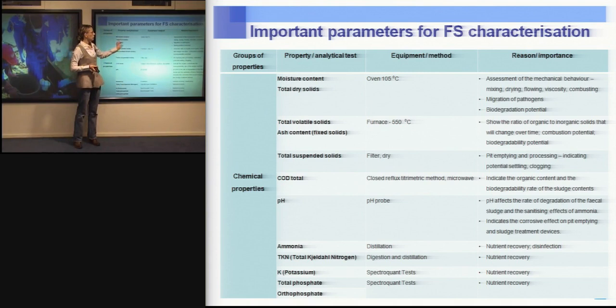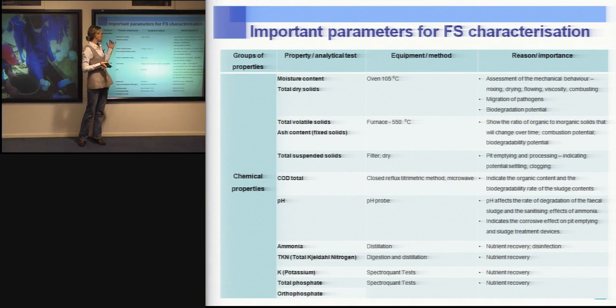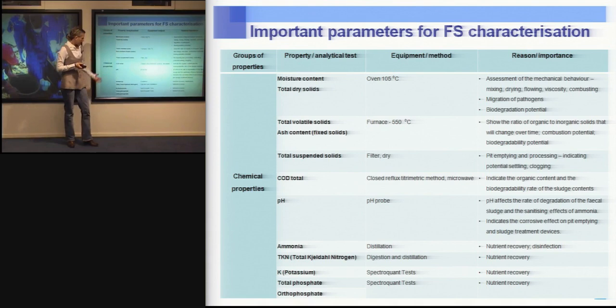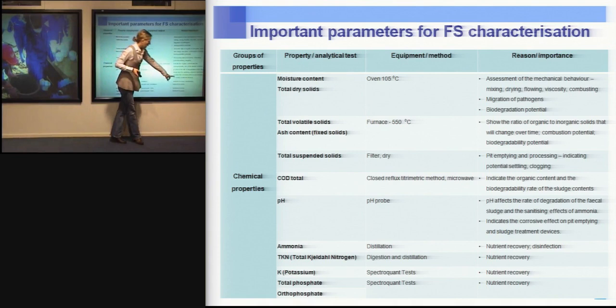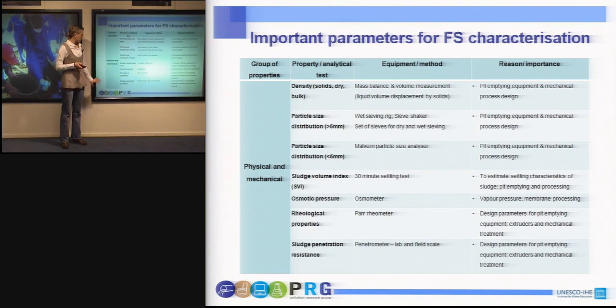In the last column I have included the reason and importance of determining these properties. For example, moisture content gives us an assessment of the mechanical behavior of fecal sludge as a material for processing like mixing, drying, flowing, or combusting. It is also an indicator of the biodegradation potential of the sludge, and a good indication of the potential migration of pathogens. If we take ammonia, TKN, phosphates content, and potassium, this gives us the potential nutrient recovery values, given that the fecal sludge has been treated for pathogen inactivation.